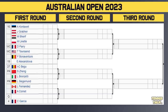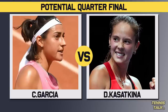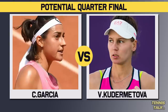Next part: Kontaveit, the 16th seed, takes on Grabber in the first round. Parry and Townsend, two wild cards, go at it, with Alexandrova (19th seed) potentially waiting in round two. Begu, the 27th seed, takes on Zhang. Then, one of the best first-round matches: Fernandez takes on Cornet, with the winner potentially facing the 4th seed Garcia in the second round. Garcia versus Fernandez or Cornet is a very fun section. Garcia likely has the best draw, and a potential quarterfinal between Garcia and Kasatkina — who played an epic match at the WTA Finals last year — looks very appealing.